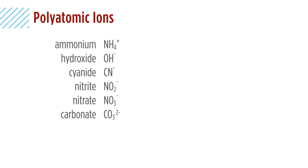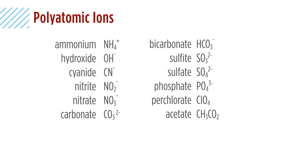For the anions, there's a long list: hydroxide OH-, cyanide CN-, nitrite NO2-, nitrate NO3- (note the -ite has one less oxygen than the -ate — a common pattern), carbonate CO3(2-), bicarbonate or hydrogen carbonate HCO3-, sulfite SO3-, sulfate SO4(2-), phosphate PO4(3-), perchlorate ClO4-, and acetate CH3CO2-, which is a molecular polyatomic.